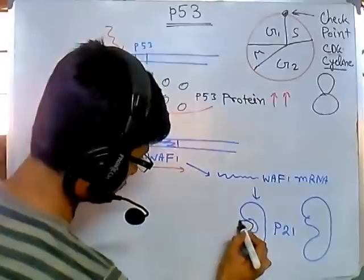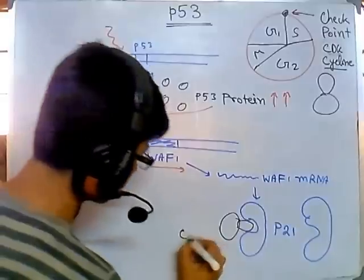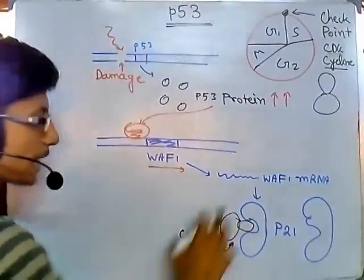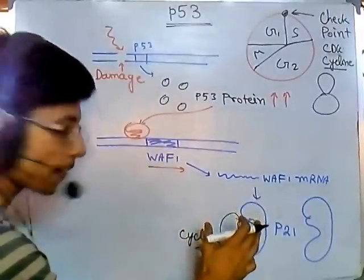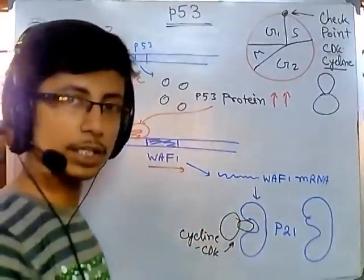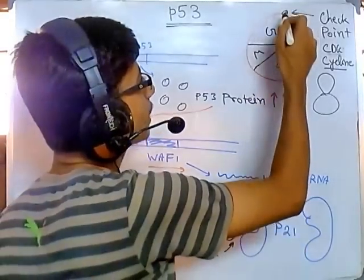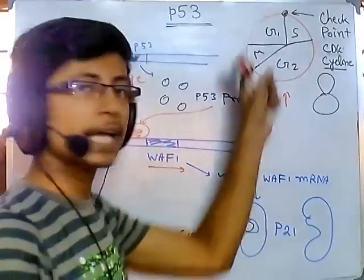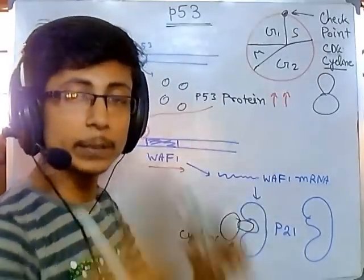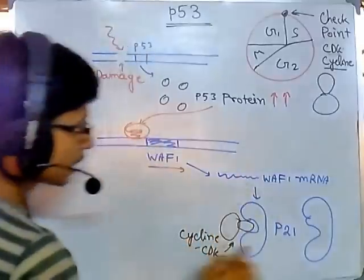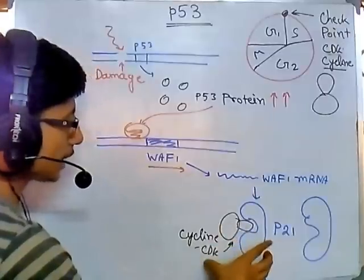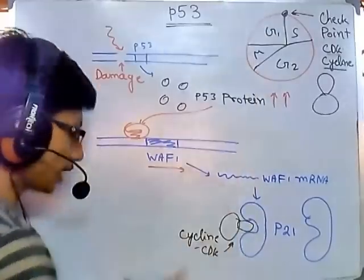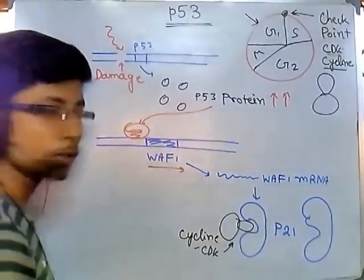p21 will go and bind with the cyclin-CDK complex. Once p21 binds with the cyclin-CDK complex, the cyclin-CDK is no longer functional. It will not allow the cell cycle to pass from G1 to S phase — it blocks this transition. The blockage is done by p21 protein, and as a result, the cell cycle is halted in the G1 stage.